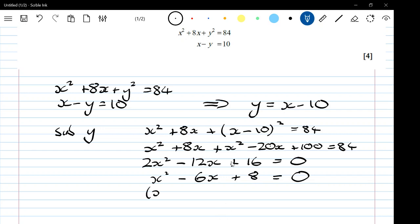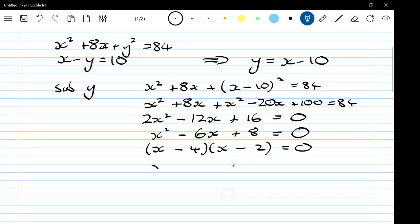And this is going to factorize to (x minus 4)(x minus 2), so we get x values of 4 and 2. We could have used our calculator at that point. Go back and find the y values. Y was x minus 10.